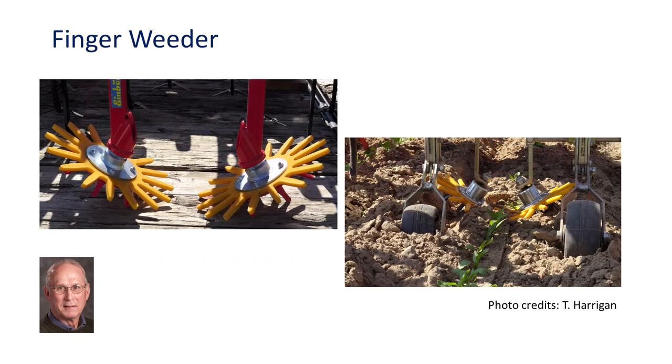A finger weeder is an in-row tool targeting weeds between plants in the row, usually in horticultural crops but suitable for large seeded crops such as maize. Flexible fingers driven by steel tines below each unit uproot or bury small weeds near the crop row. A size difference between the crop and the weed is important. Finger weeders are most easily used in transplanted crops once the roots have anchored the crop. If the crop is tall, hilling to bury small weeds is a good approach. If weeds germinate simultaneously with the crop, it will be difficult to uproot or bury the weeds without uprooting or burying the crop.